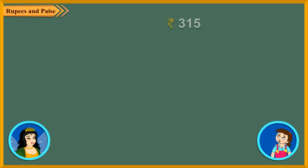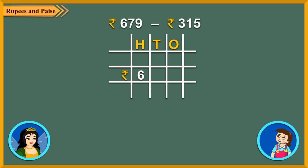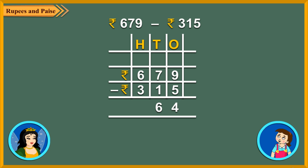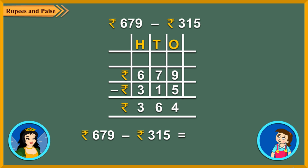Now let us subtract 315 Rupees from 679 Rupees. First, arrange the amounts in columns. Now subtract the ones: 9 ones minus 5 ones is equal to 4 ones. Next, subtract the tens: 7 tens minus 1 ten is equal to 6 tens. Then, 6 hundreds minus 3 hundreds is equal to 3 hundreds. So 679 Rupees minus 315 Rupees is equal to 364 Rupees.